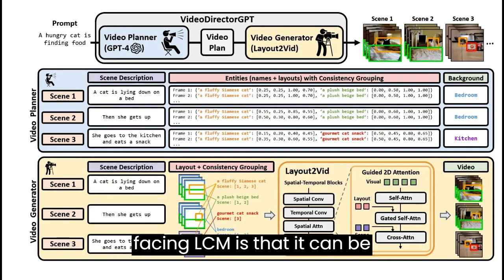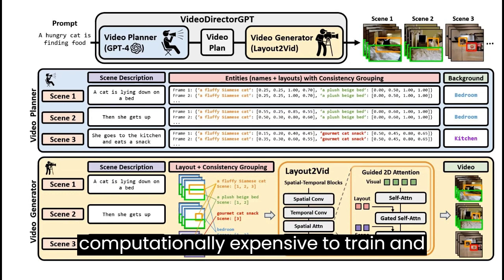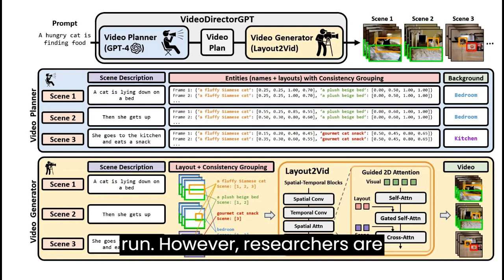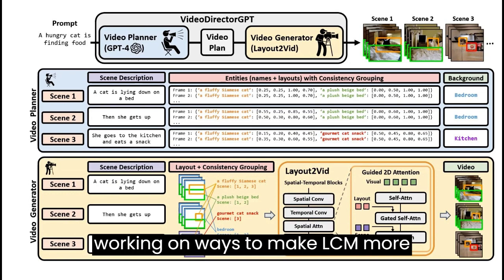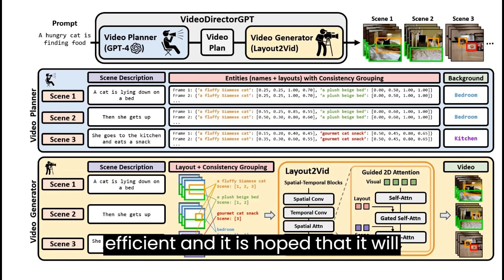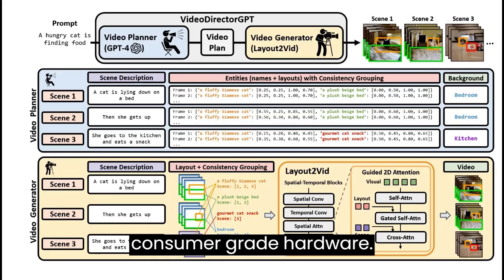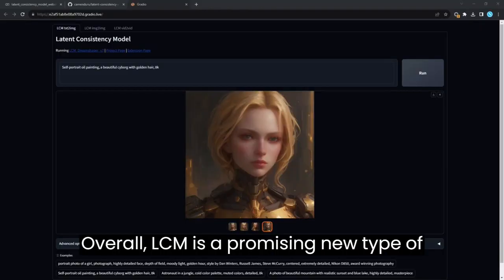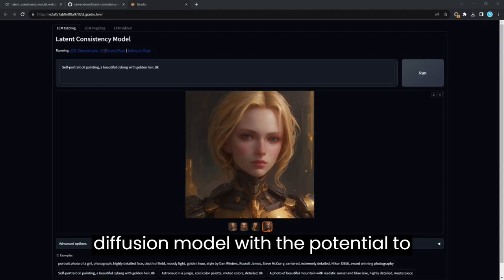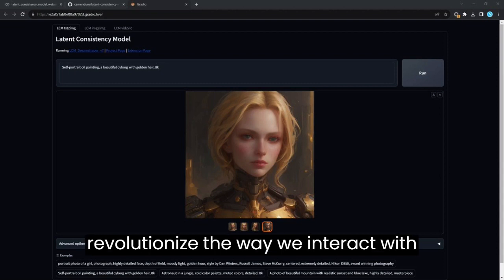One of the challenges facing LCM is that it can be computationally expensive to train and run. However, researchers are working on ways to make LCM more efficient, and it is hoped that it will eventually be possible to run LCM on consumer-grade hardware. Overall, LCM is a promising new type of diffusion model with the potential to revolutionise the way we interact with images.